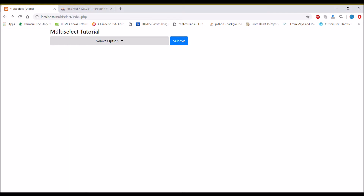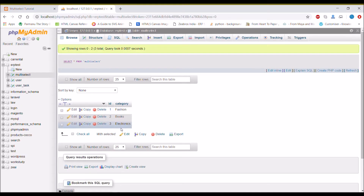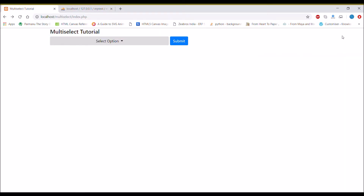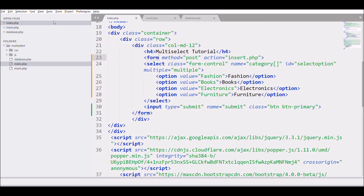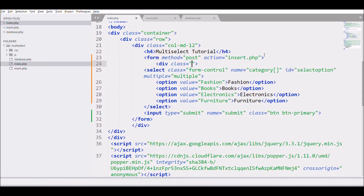Before that, let me show you where I left off in my previous video. That's one select option, category one, and insert that into the database — that's where I left in the video. I'll be continuing and changing my code from here. The initial steps: first I'm going to change my view, changing into a row with col-md-6, then change the main select, and define a sub-category select.